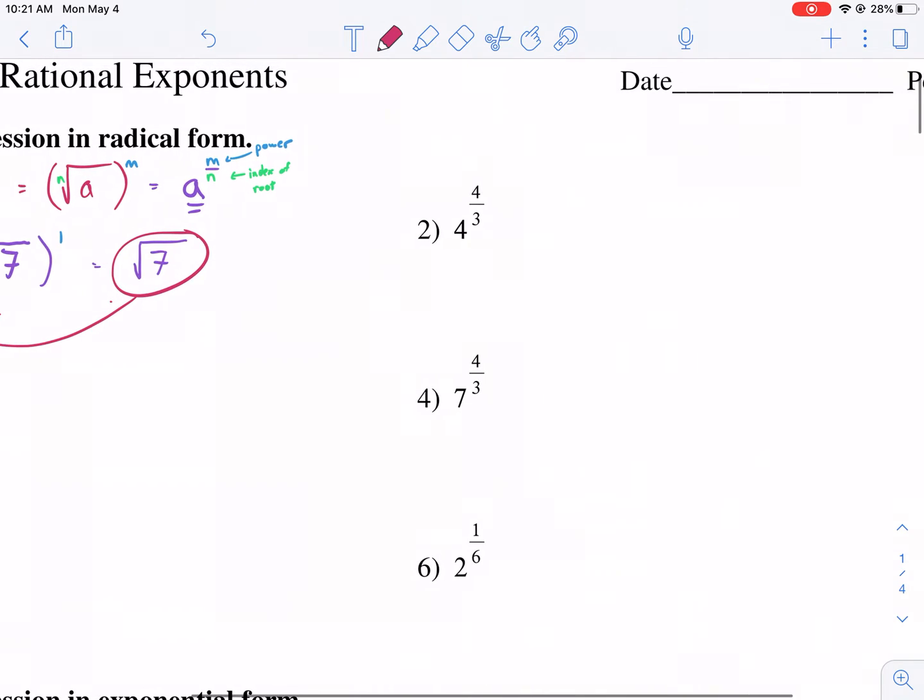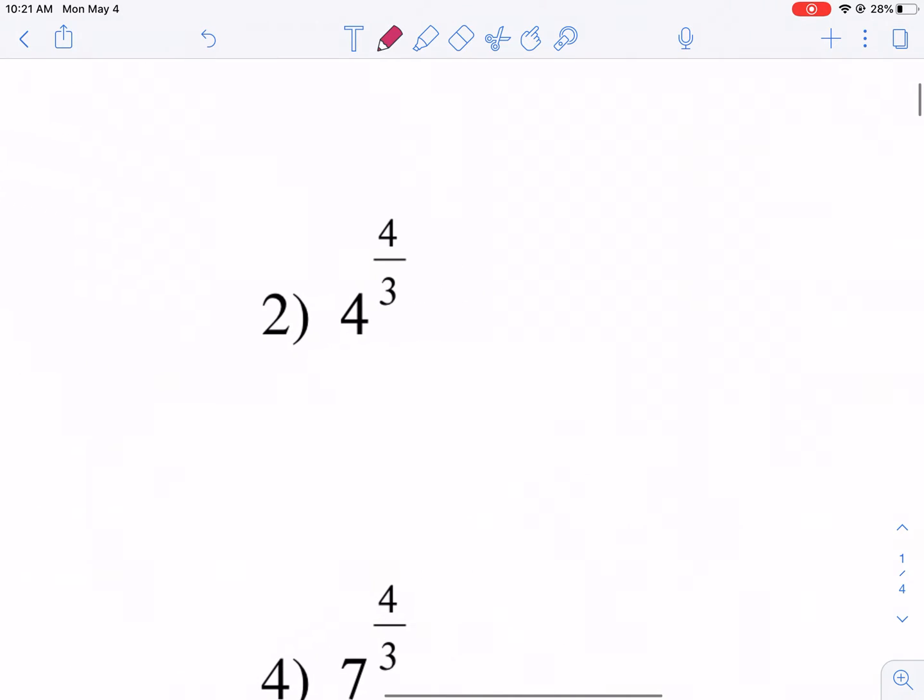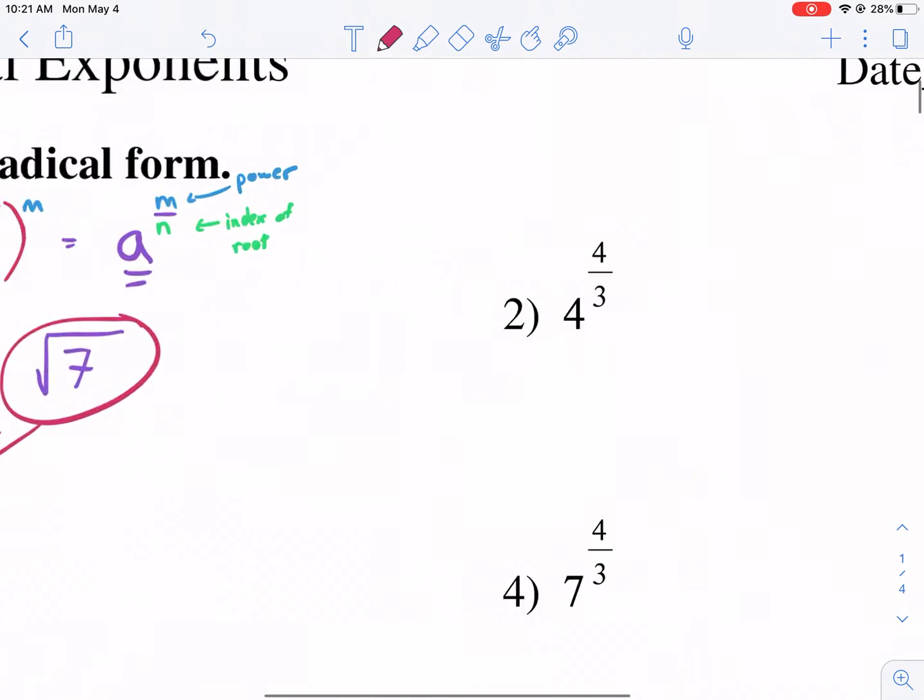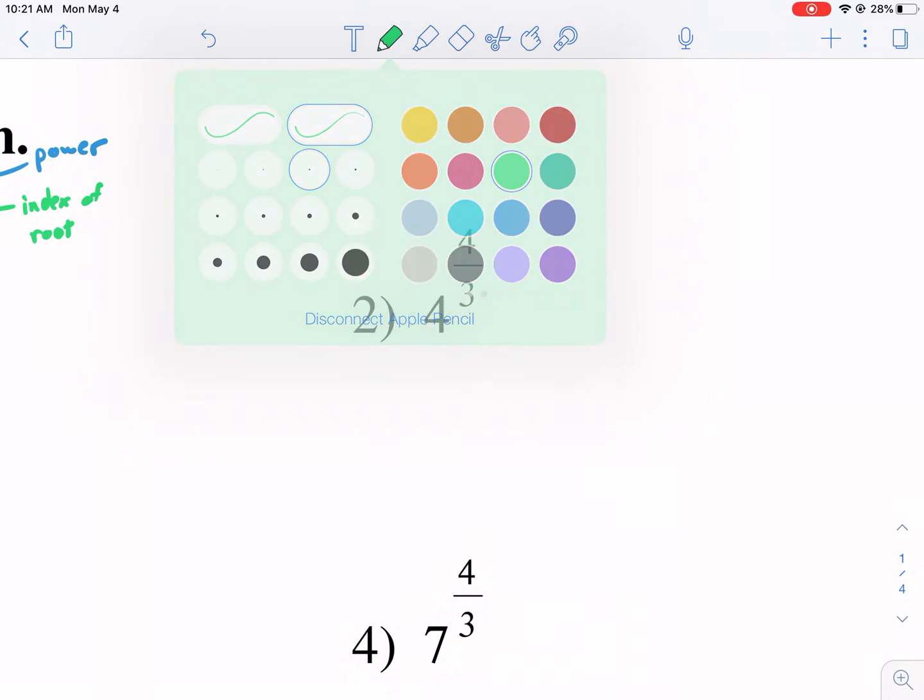So let's go ahead and work on number two. Again, we're just writing in radical form here. So the first thing we need to identify is we need to identify our index. The index is always the bottom of the fraction of the exponent. So that's the index of root. And then four is our power.